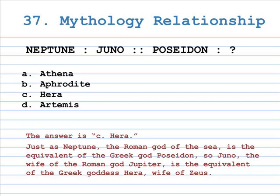Number 37: mythology relationship. Neptune is to Juno, as Poseidon is to A. Athena, B. Aphrodite, C. Hera, D. Artemis. The correct answer is C, Hera. Just as Neptune, the Roman god of the sea, is the equivalent of the Greek god Poseidon, so Juno, the wife of the Roman god Jupiter, is the equivalent of the Greek goddess Hera, wife of Zeus. The makers of the MAT love the names of the Greek and Roman gods.